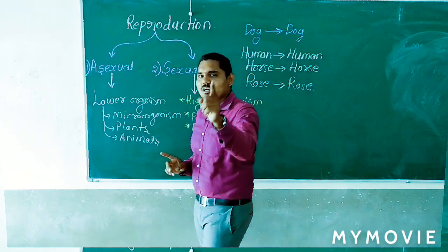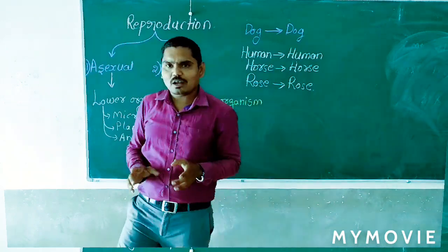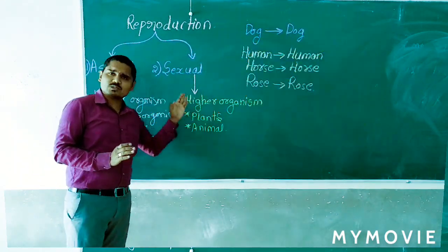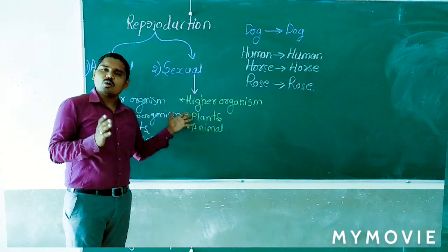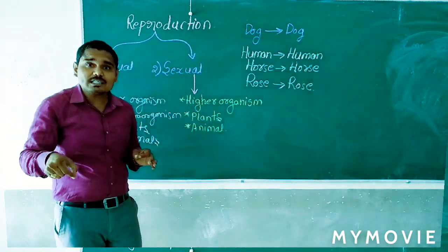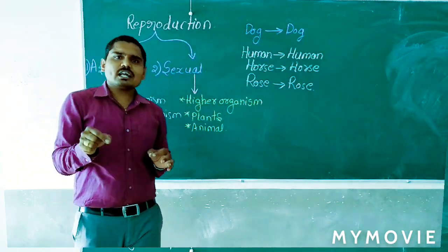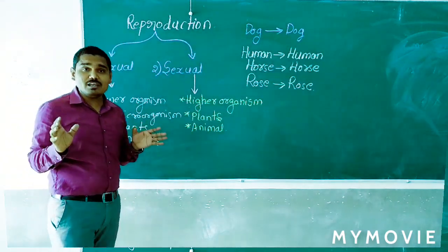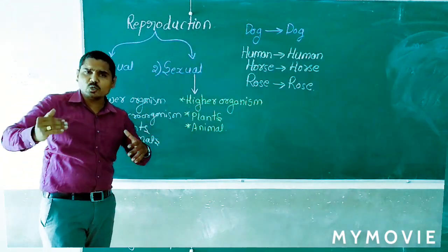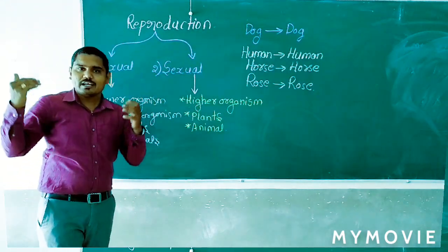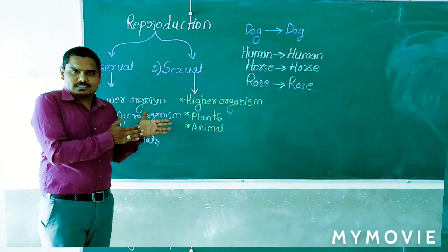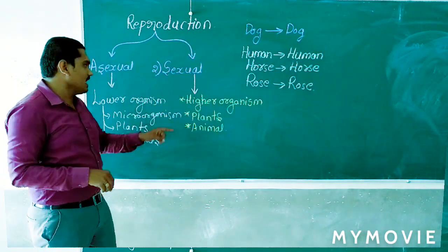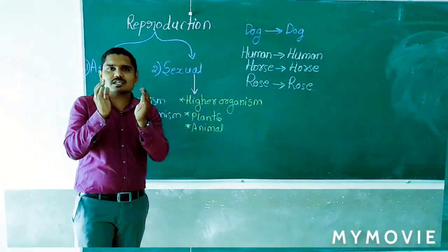You might ask: can asexual reproduction also occur in plants and animals? Yes. Even among animals, there are some lower organisms. Some animals don't have the ability to highly develop, and some of those organisms come under asexual reproduction.